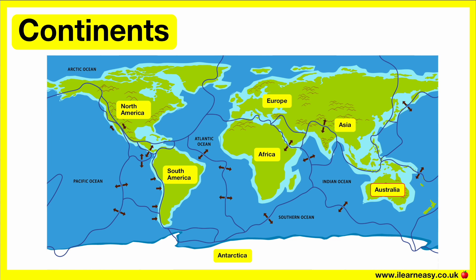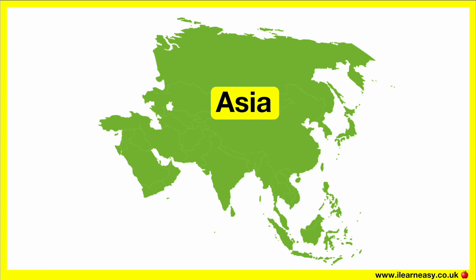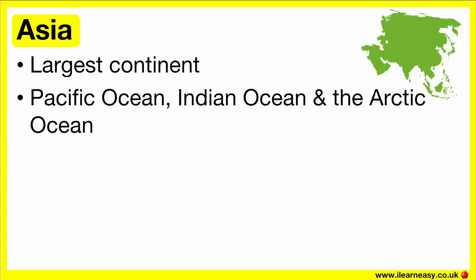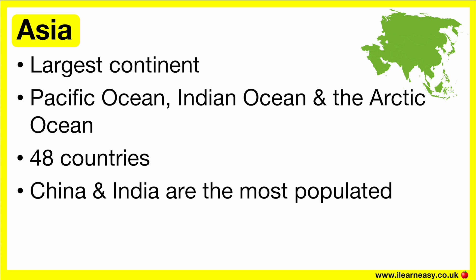Asia is the largest continent. It covers one third of all of the land on Earth. Asia is surrounded by the Pacific Ocean, Indian Ocean, and the Arctic Ocean. There are 48 countries in Asia, which are home to two-thirds of the world's population. There are over 2,300 languages spoken in Asia. The most populated countries in the world are China and India, both being home to nearly one billion people each.